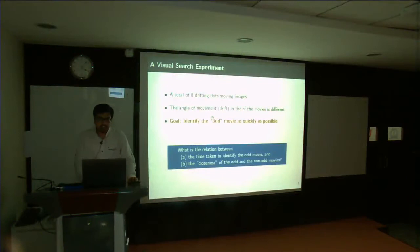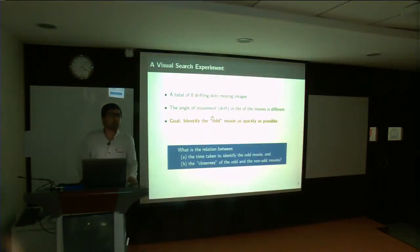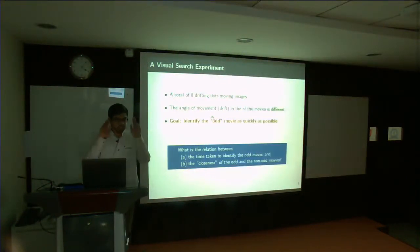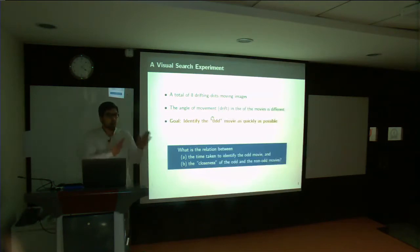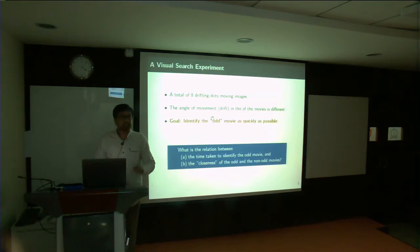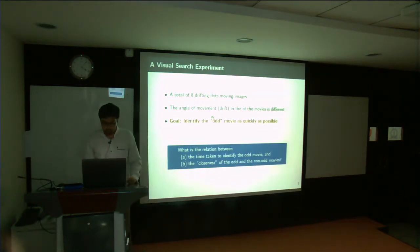So there is a certain relation between the time that you take to identify the odd movie versus the closeness associated between the two images — the non-odd and the odd movies. So how do we capture this closeness? Is there a way by which we can capture this closeness?